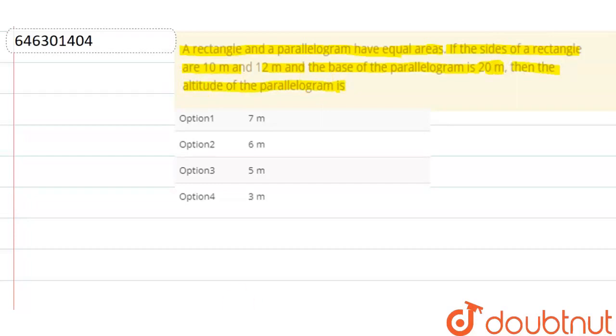So, let's say that we have a rectangle of this shape and we have a parallelogram. The length of the rectangle is 12 meter and the breadth of rectangle is 10 meter. And the base of the parallelogram is given to us as 20 meter. So, let's say this is the base.